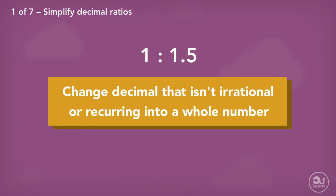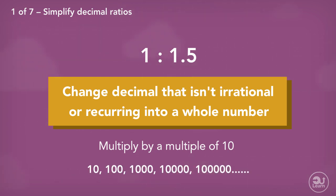An easy way to change a decimal number that isn't recurring into a whole number is to multiply it by a multiple of 10, such as 10, 100, 1000, or even greater.